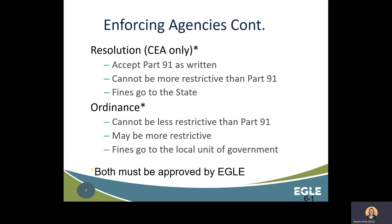Ordinances cannot be less restrictive than Part 91 — they cannot make lawful what is not lawful under Part 91, and cannot create or remove an exemption in the law. An example of a more restrictive ordinance would be changing the distance needed from a water body to require a permit from 500 feet to 100 feet. All ordinances must be approved by EGLE, and the agency must have the ability to enforce their more restrictive ordinance. Changes to your ordinance or resolution must go through EGLE for approval; call district staff if you are planning on making changes.